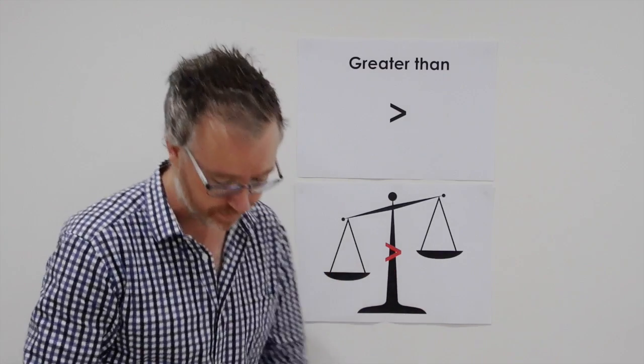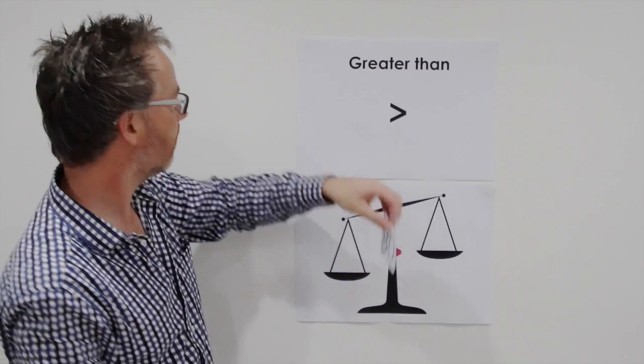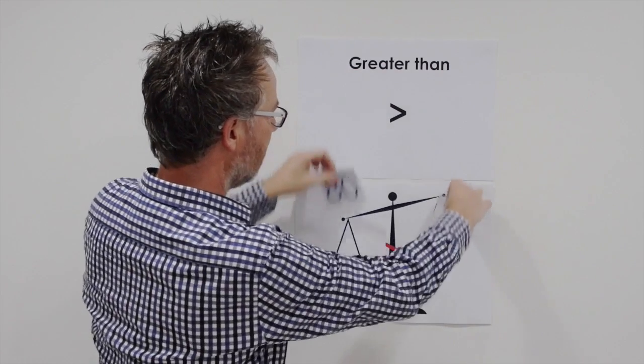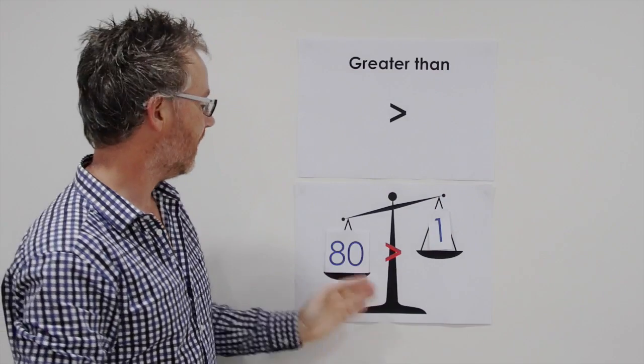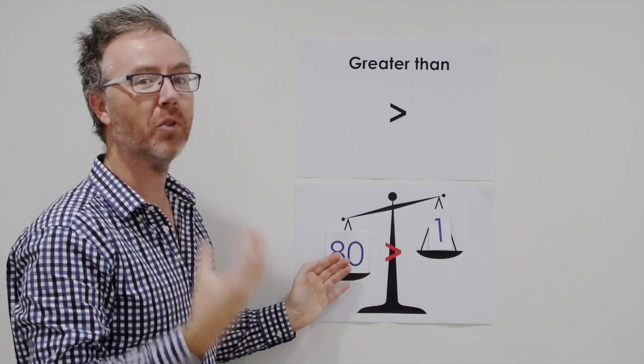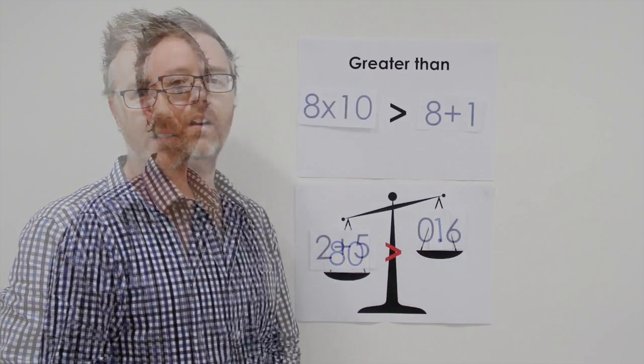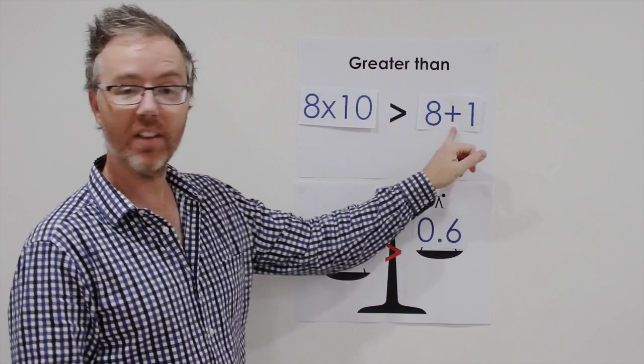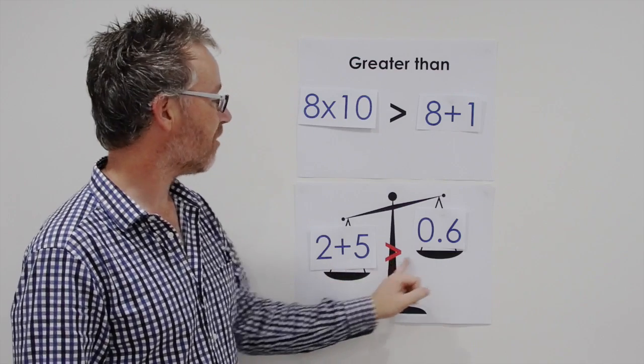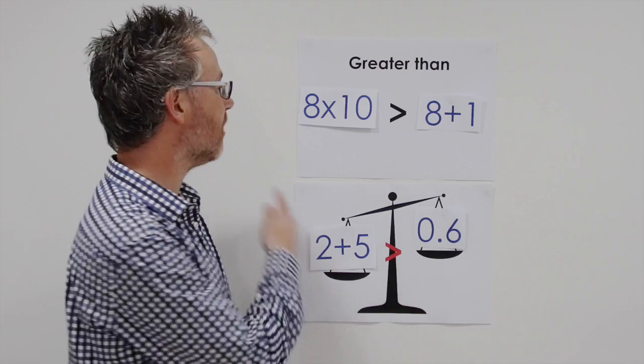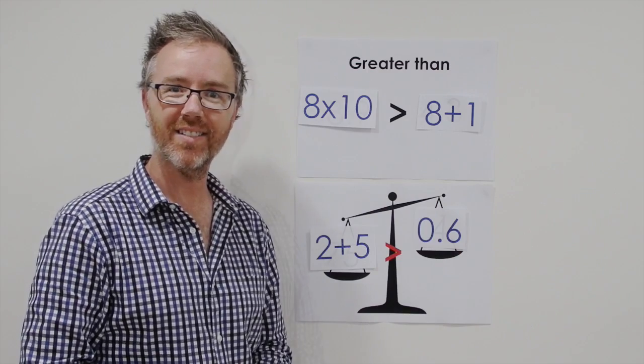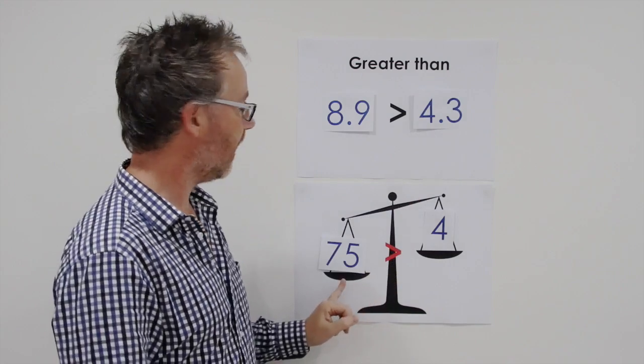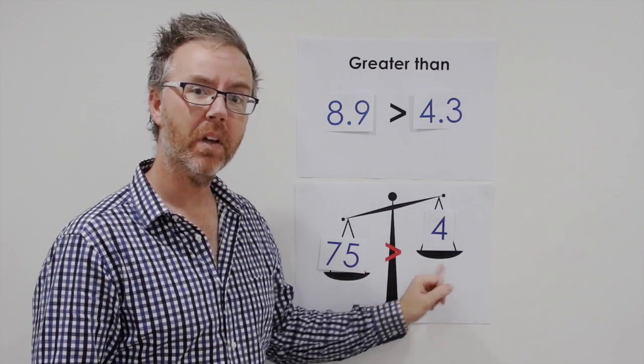So let's look at an example: 80 is greater than one. And of course if we transfer that down to our understanding of mass, 80 is bigger, is heavier if we're doing grams or kilograms, than one. Next examples: eight tens, 80, is greater than eight and one which is nine. 80 is greater than nine. Two plus five, seven, is greater than six tenths. You'll notice everybody, we always read across left to right. Let's try a couple more. Eight and nine tenths is greater than four and three tenths, and 75 is greater than four.